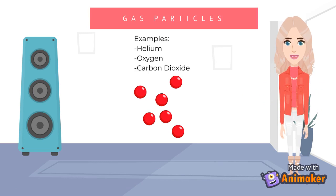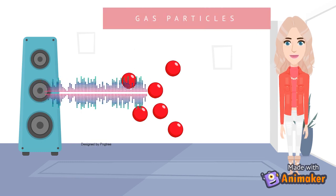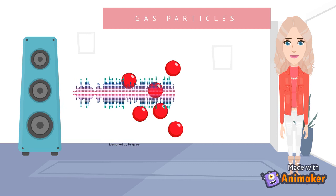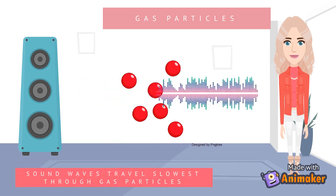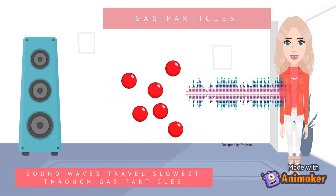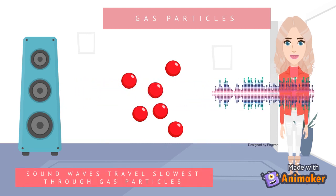Some examples of gases include: 1. Helium, 2. Oxygen, and 3. Carbon dioxide. Sound waves travel slowest through gas particles.